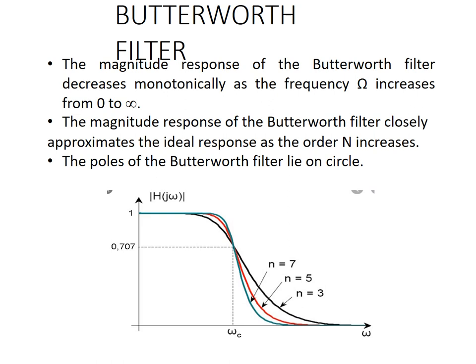First of all, we are going to see what is Butterworth Filter. Butterworth Filter is one type of analog filter in the IIR filter design. The magnitude response of the Butterworth Filter decreases monotonically as the frequency omega increases from 0 to pi. The magnitude response closely approximates the ideal response as the order n increases. The poles of the Butterworth Filter lie on the circle.